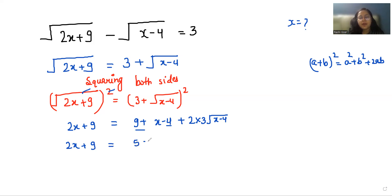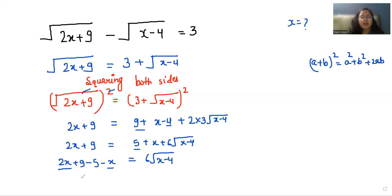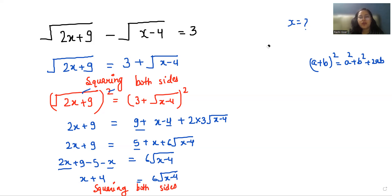So 2x + 9 equals 9 + x - 4 + 6 times square root (x - 4). That simplifies to 9 - 4 = 5, so 2x + 9 = x + 5 + 6√(x - 4). Bringing terms across: 2x - x and 9 - 5 gives us x + 4 = 6√(x - 4).